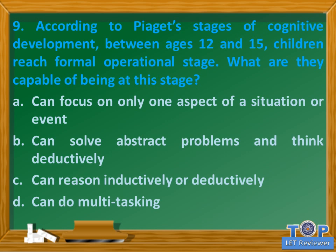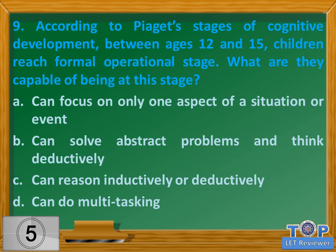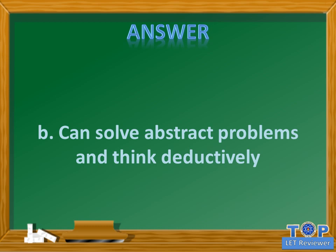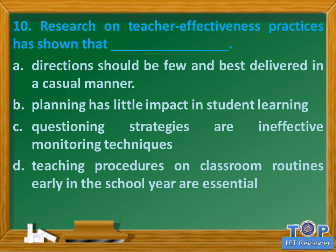Question number nine: according to Piaget's stages of cognitive development, between ages 12 and 15 children reach the formal operational stage. What are they capable of at this stage? A) can focus on only one aspect of a situation or event, B) can solve abstract problems and think deductively, C) can reason inductively or deductively, D) can do multitasking. Answer: B) can solve abstract problems and think deductively.